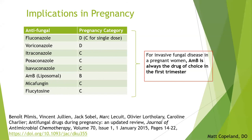In pregnancy, amphotericin B is always the drug of choice, especially in the first trimester during organogenesis. It is the only antifungal that is well-studied in pregnancy, though it is unfortunately the most toxic. The azoles influence cholesterol synthesis, which is important for cellular development in a developing fetus, making them contraindicated.